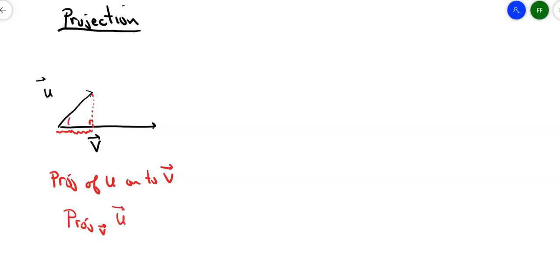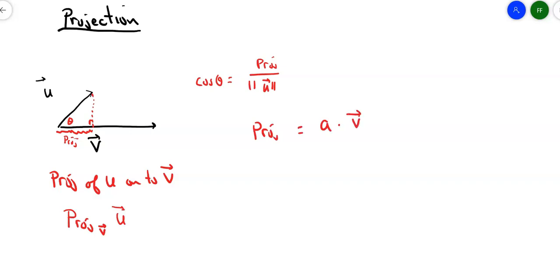Look at this angle in here between those two vectors. If I set this up and called this piece down here the projection, then I could write it as: the cosine of theta equals the projection over the magnitude of u — adjacent over hypotenuse, where the adjacent side is the projection and the hypotenuse is u. So that projection is some scalar times the vector.